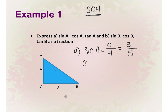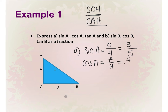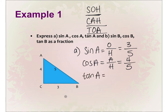Second, cosine of A. Cosine is CAH — adjacent over hypotenuse. The adjacent side to angle A is 4, and the hypotenuse is 5. So cosine of A equals 4 over 5. For tangent of A using TOA — opposite over adjacent — the opposite is 3 and the adjacent is 4. So tangent of A equals 3 over 4.